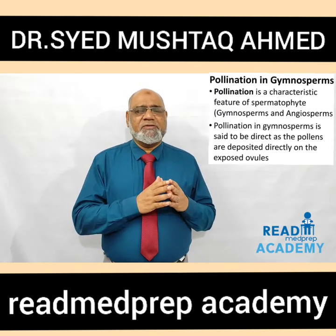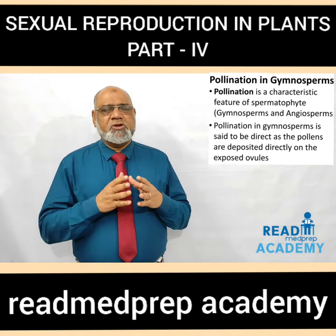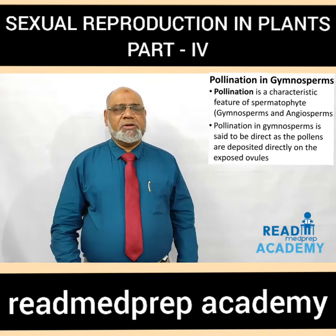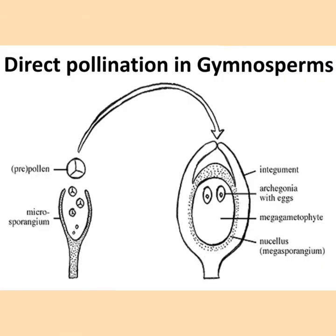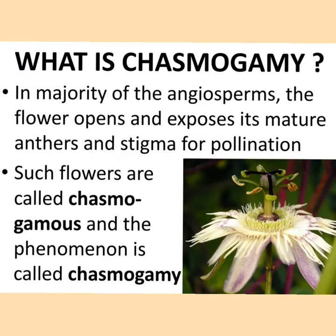Pollination is a characteristic feature of spermatophytes — gymnosperms and angiosperms. Pollination in gymnosperms is said to be direct as the pollens are deposited directly on the exposed ovules. In angiosperms, it is said to be indirect as the pollens are deposited on the stigma of the pistil.